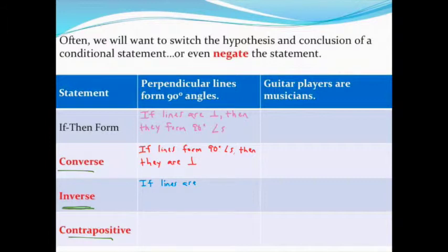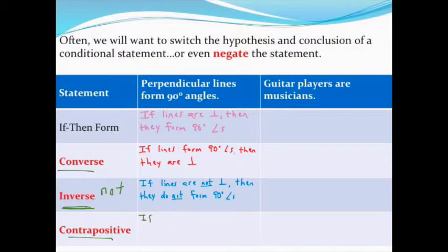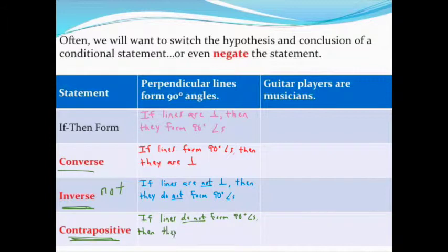The inverse takes the original if-then statement in that order but adds the word 'not' to it. For example: 'if lines are not perpendicular, then they do not form right angles.' The contrapositive does both — it switches the hypothesis and conclusion and adds 'not.' So: 'if lines do not form 90-degree angles, then they are not perpendicular.'